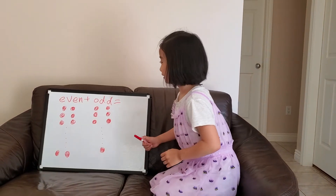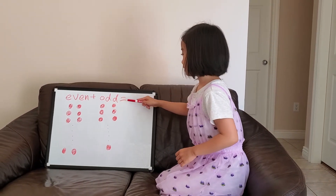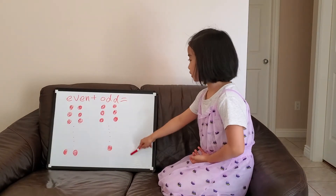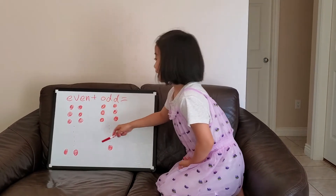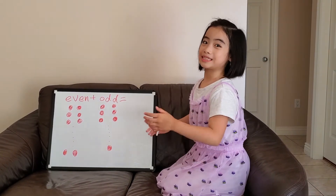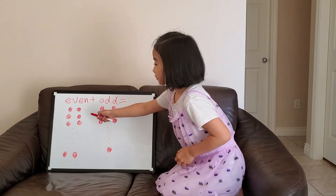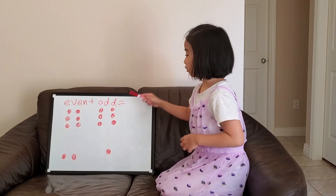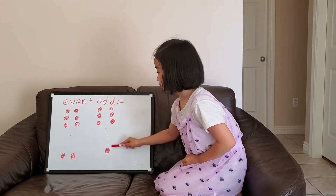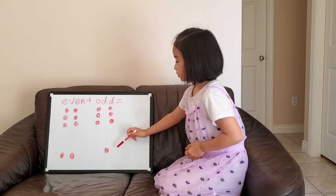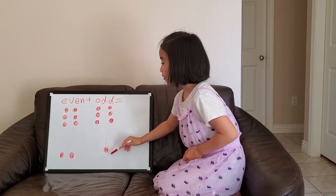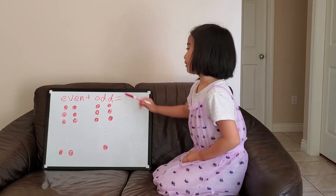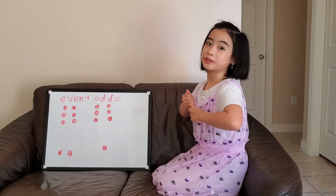Now we can look at even plus odd — is the sum even or odd? We can look at this picture shown below. Even can always be paired with each other, and odd will always have a leftover. So no matter how you add these up, there is still going to be this extra one. So even plus odd is equal to odd.